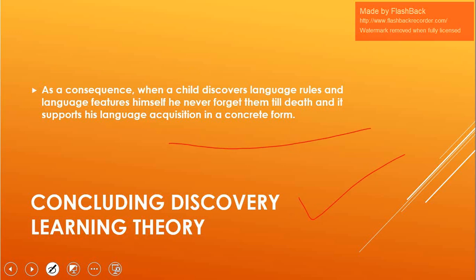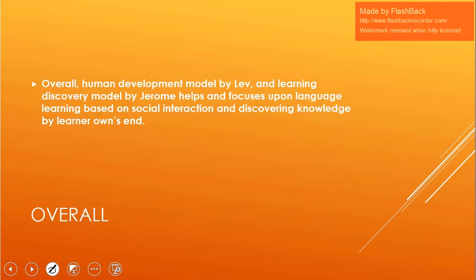As a consequence, when a child discovers language rules and language features himself through repeated observation, he discovers knowledge like: use 'he' and 'she,' use 's' with the verb in third person, use 'ed' with past tense verb forms, use irregular forms accordingly. Everything is discovered by the child through repeated observations and is never forgotten. The acquisition becomes very strong because the child discovers the knowledge by himself.